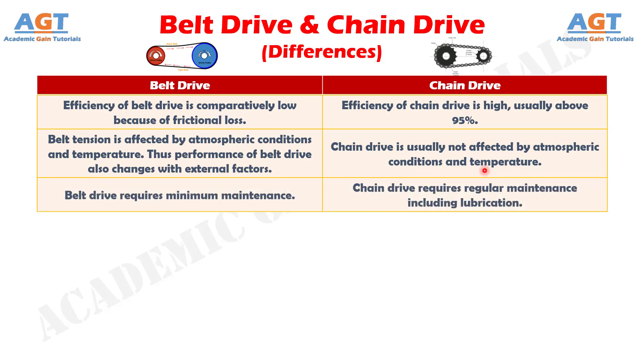Difference number 8: Belt drive requires minimum maintenance. Whereas, chain drive requires regular maintenance including lubrication.